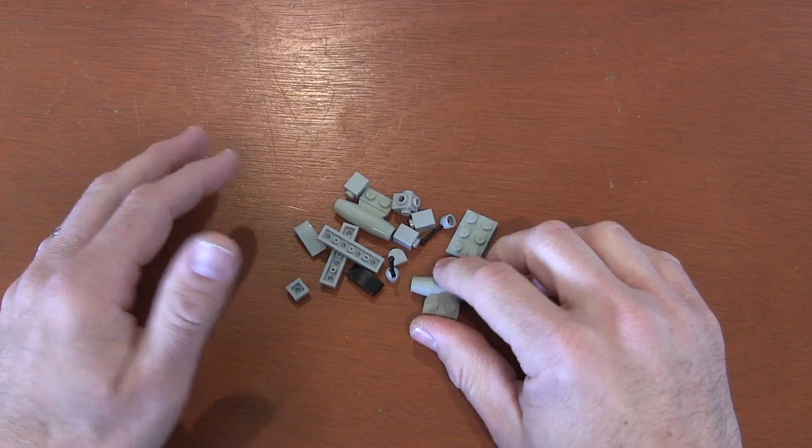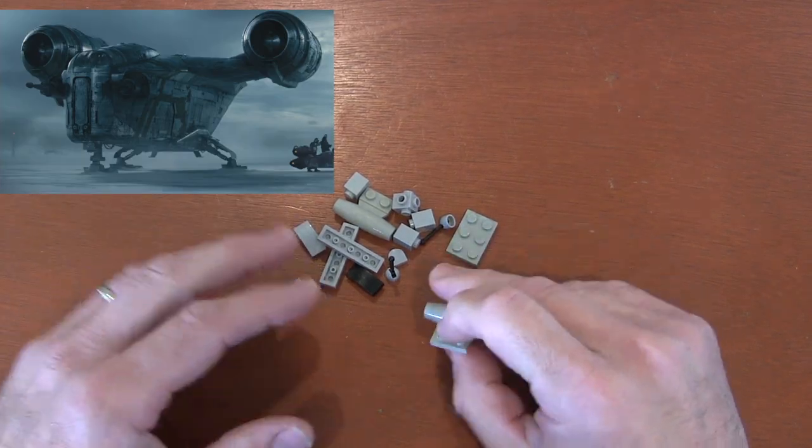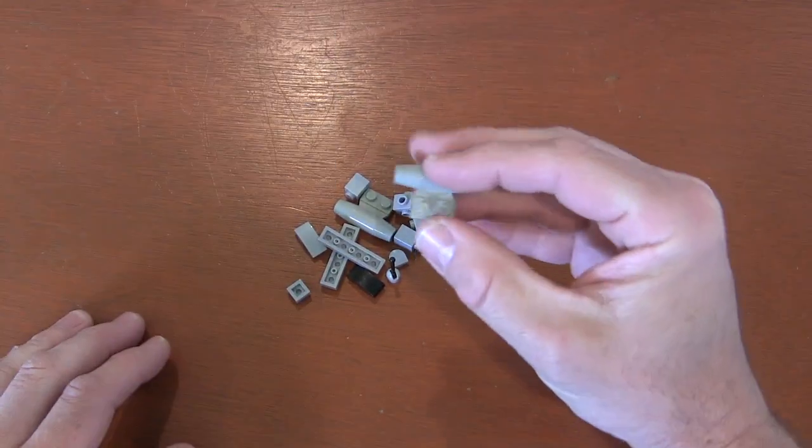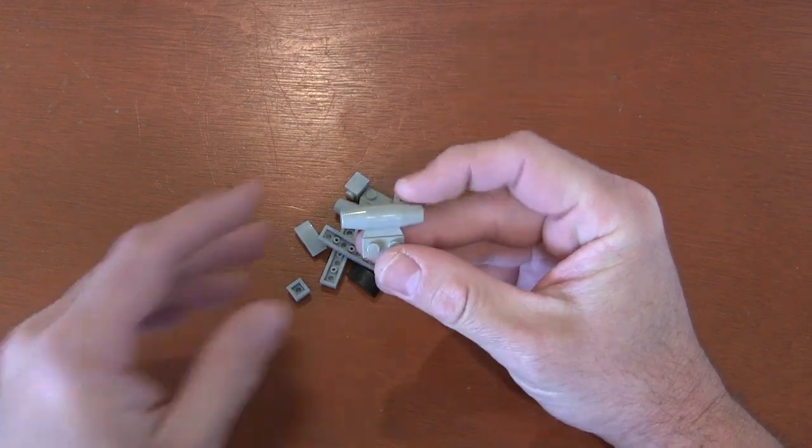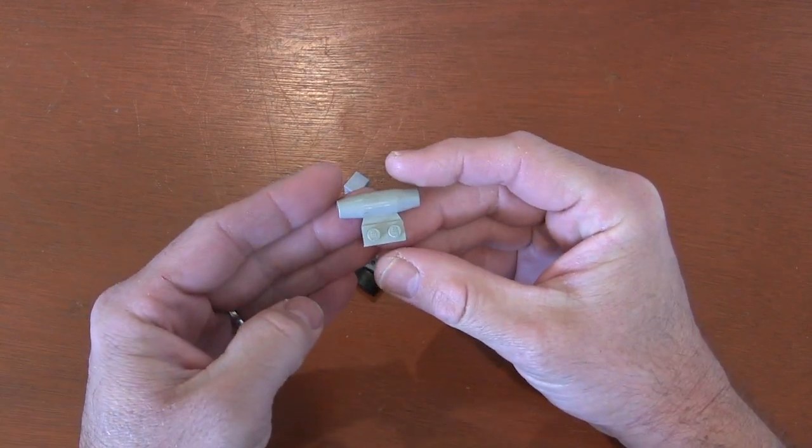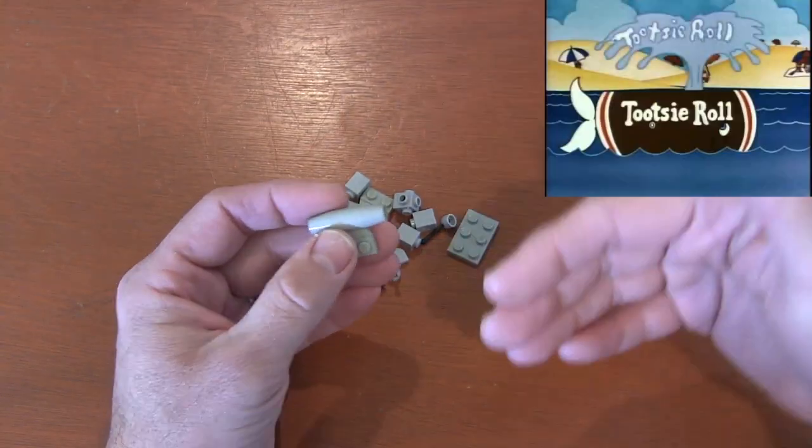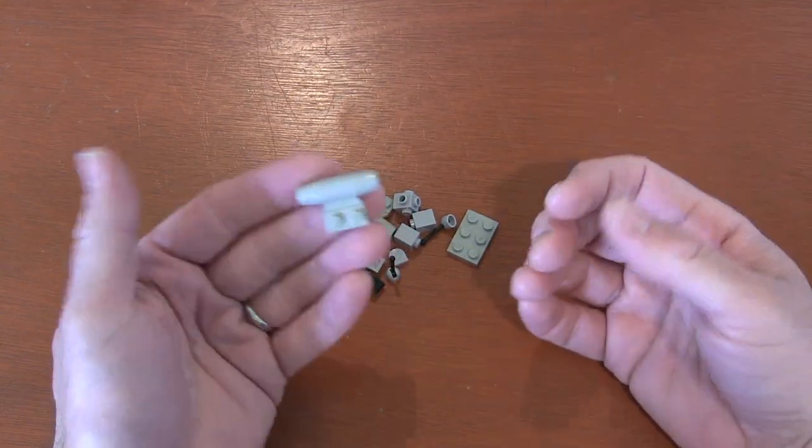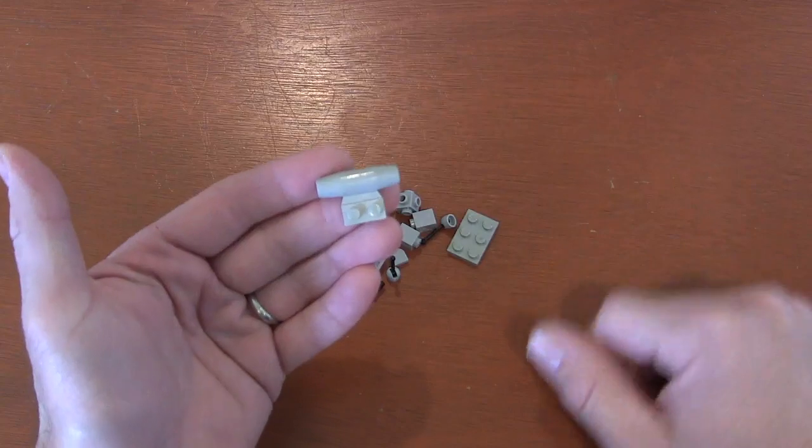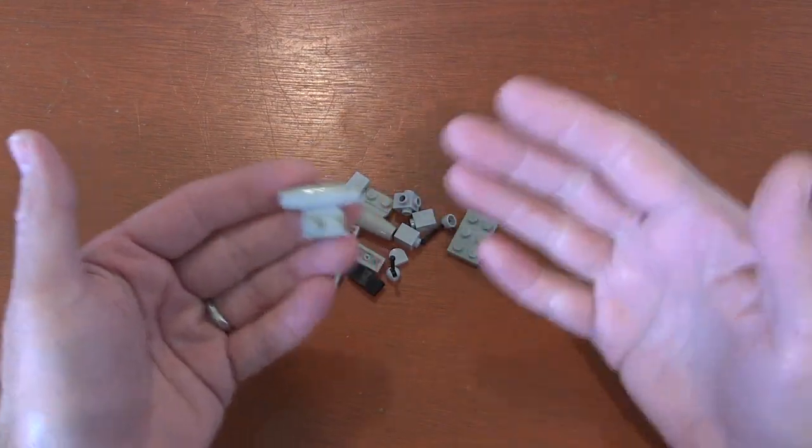When I was watching The Mandalorian and the Razor Crest came into view and I saw those engines on the wings, I knew instantly I was going to be building it with this piece I had, this 1x2 plate with small smooth engines. And just like most people see a Tootsie Roll and watch the world around them, I see Lego pieces. So I started with this engine and started building the Razor Crest around it.